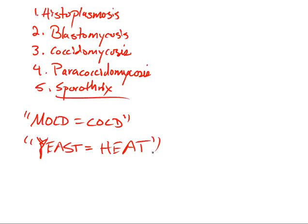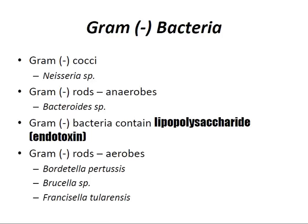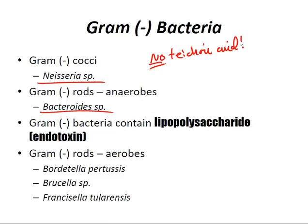Moving to gram-negative bacteria. Gram-negative cocci refers to Neisseria species. Gram-negative rods or anaerobes refer to the Bacteroides species. Gram-negative bacteria contain lipopolysaccharide, which is endotoxin. Peptidoglycan in gram-negative bacteria is thinner — a single layer — with no teichoic acid. On the gram stain, they appear red because they do not absorb crystal violet.